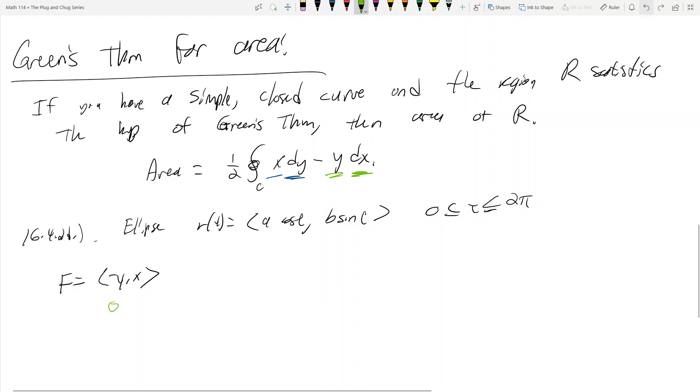Since we have to evaluate that line integral, we need to find F(r(t)), which is going to be negative y, so we plug in -b sin t, and then x is going to be a cos t.